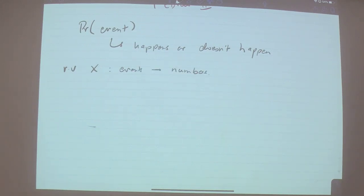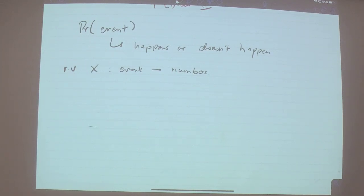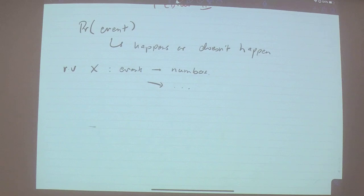The next thing is random variables. A random variable x is informally a mapping from events to numbers. If I say this random variable is one if the coin tosses heads, that's a random variable. I can also say the value of the random variable is 53 if the coin tosses heads — that's also acceptable. Even if you have the same set of events, you can define different kinds of random variables on them. A random variable is just a way to map from events to actual numbers.